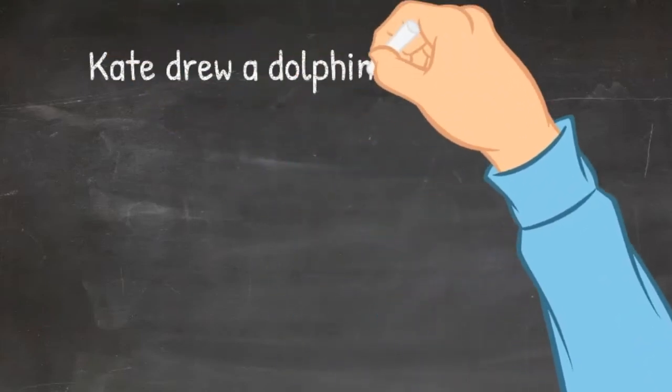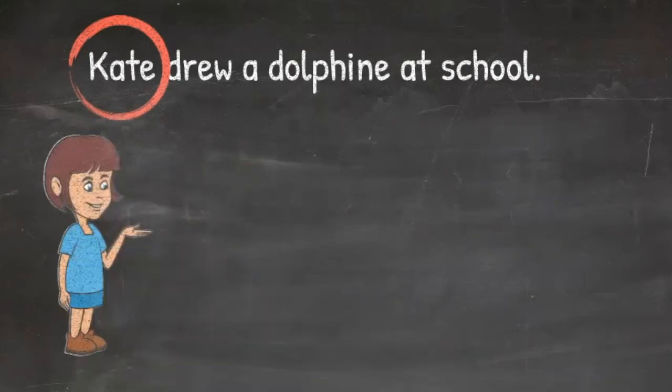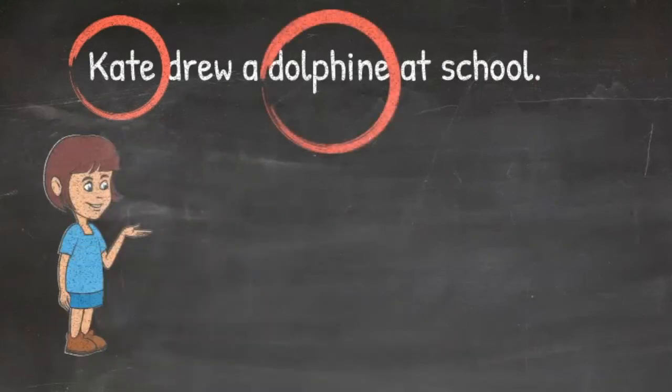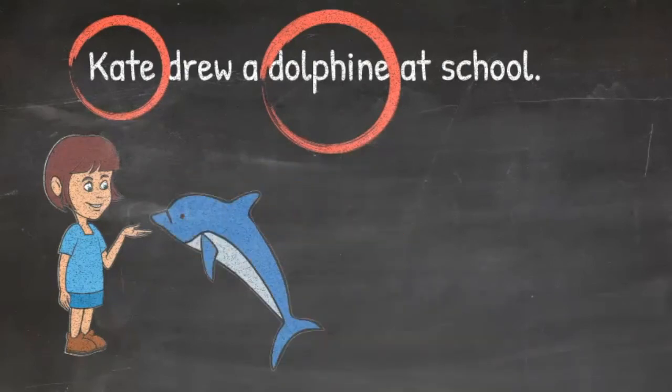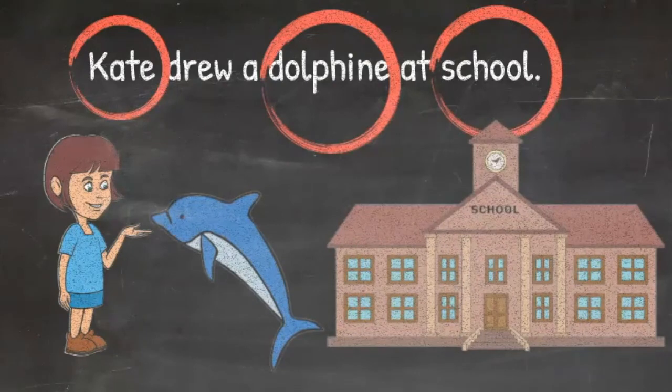I want to do one more. Kate drew a dolphin at school. In this sentence, Kate is a noun, it's a person. Dolphin is a noun, it is an animal. And school is also a noun, it is a place.